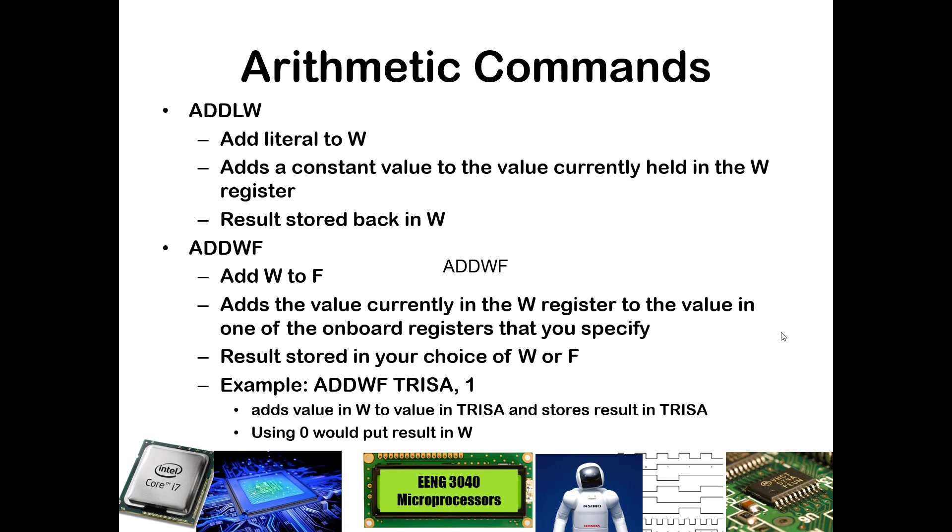ADDWF takes what's in W and adds it to a particular special function register that you indicate. So the example here, ADDWF TRISA, 1, takes what's currently in TRISA, adds what is in the current value of the W register, and then the comma 1 says store this result back into the W register. If we were to put a 0 there, then that would store the result into the W register.